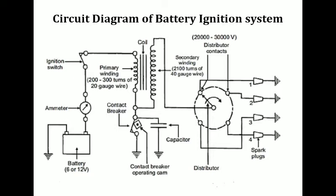The battery is used to provide a sufficient amount of electrical energy to the circuit. The ammeter is used to measure the amount of current going through the circuit. The ignition switch is used to make or break the circuit whenever required, by pressing or clicking it. There should also be a ballast resistor, which is placed between the ignition switch and the primary winding.